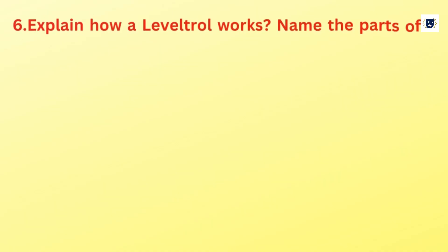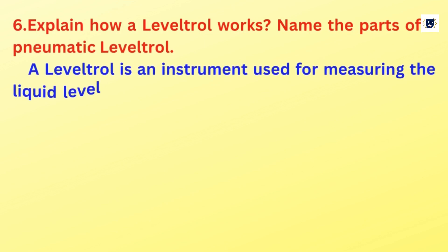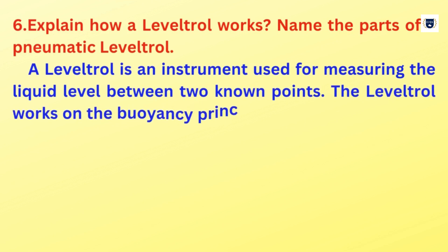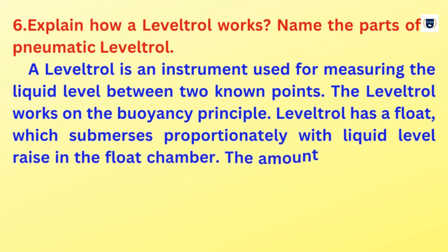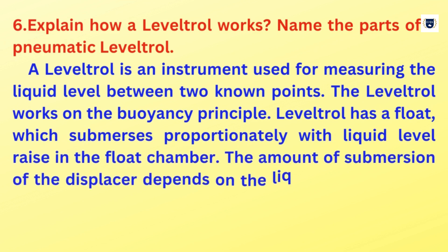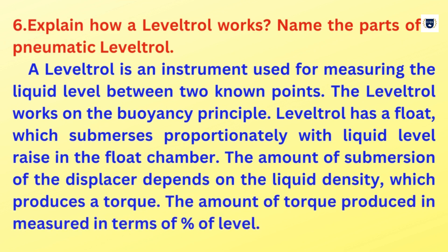Explain how a level troll works. A level troll is an instrument used for measuring the liquid level between two known points. The level troll works on the buoyancy principle. It has a float which submerses proportionately with liquid level rise in the float chamber. The amount of submersion of the displacer depends on the liquid density, which produces a torque. The amount of torque produced is measured in terms of percent of level.